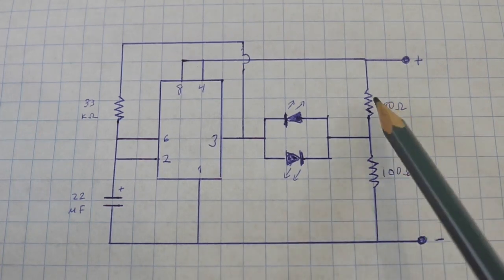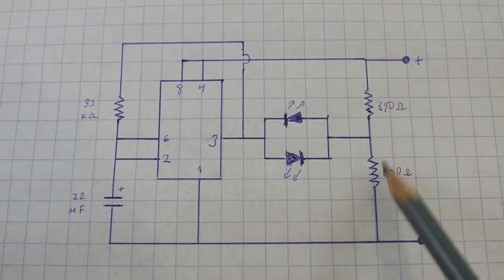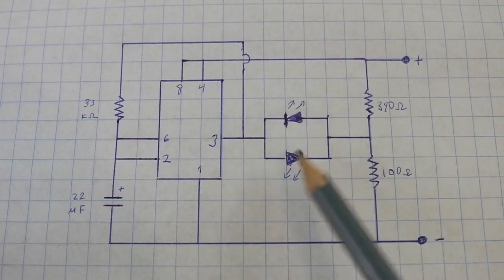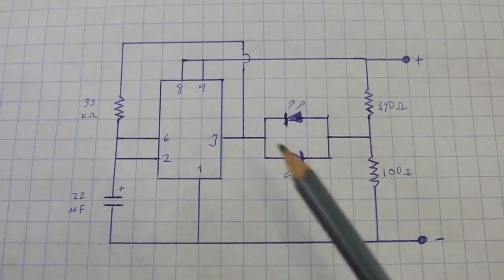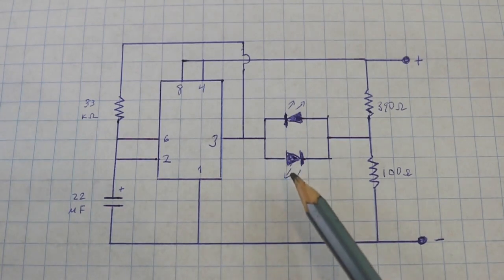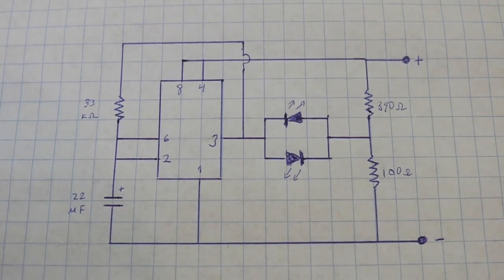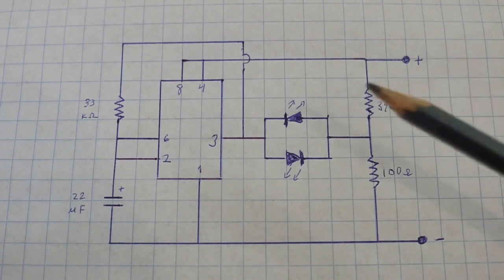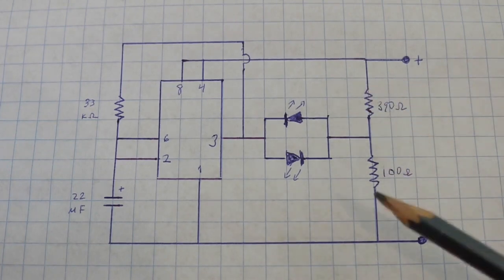And these two resistors correspond to the two LEDs. Since I am using red and green LEDs that require different currents, I have two different resistors.